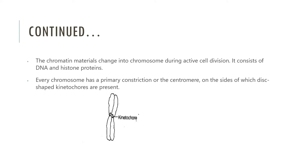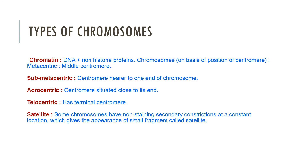In the chromosome diagram, you will notice a primary constriction at one place. This constriction is called the centromere. This is the primary constriction on the chromosome, and after that we look at the types based on centromere position.